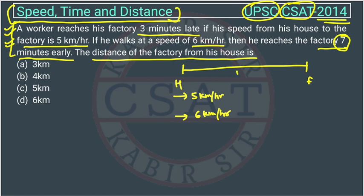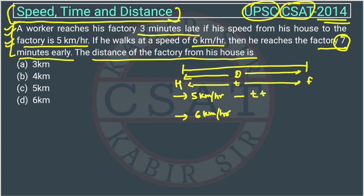Suppose the distance is D from home to factory. Suppose the normal time is T — the correct time to reach from home to factory. In the first case, he is taking 3 minutes more. We will convert 3 minutes into hours because the speed is in km per hour. In the second case, when he is going at 6 km per hour, he is taking 7 minutes less.